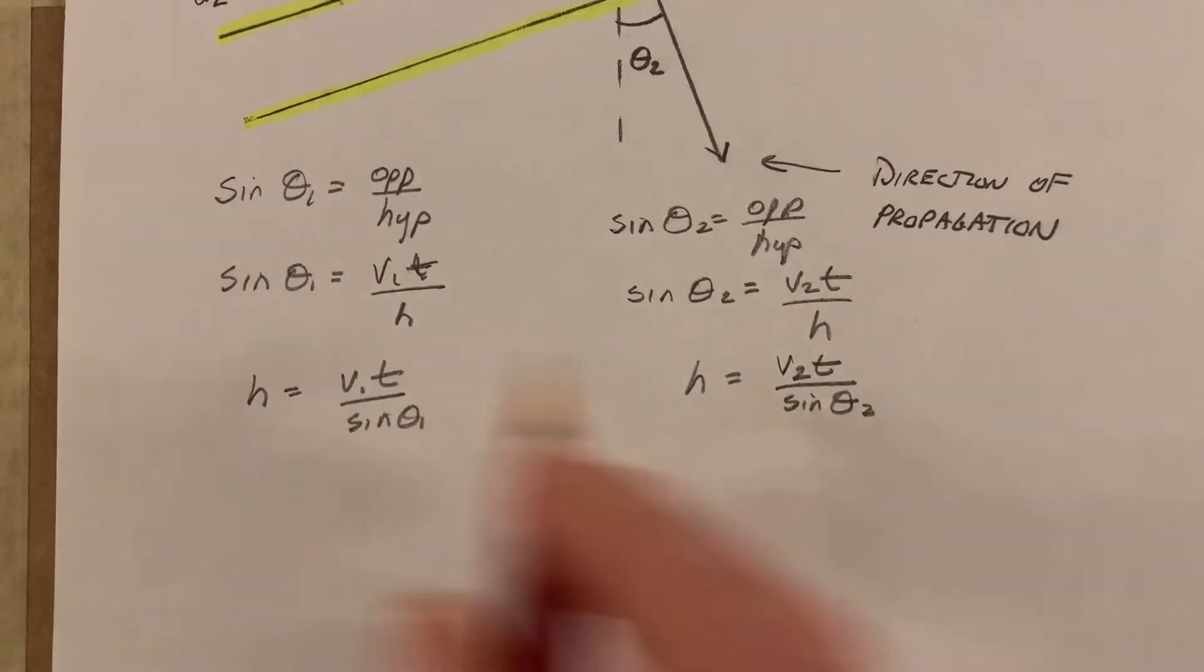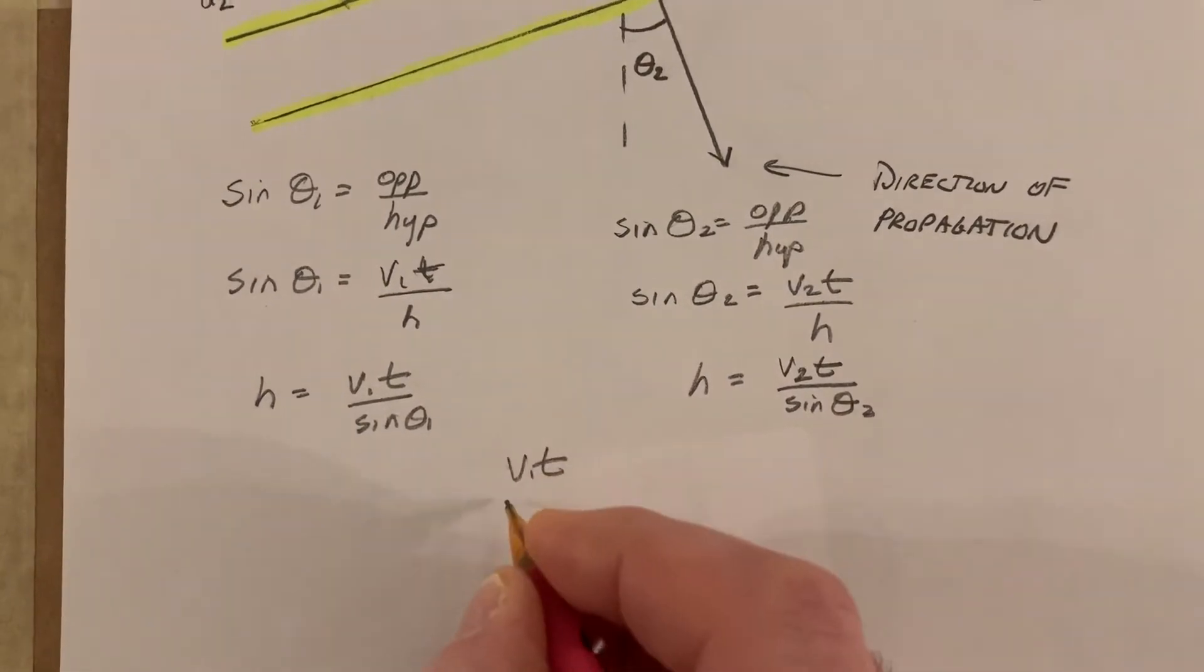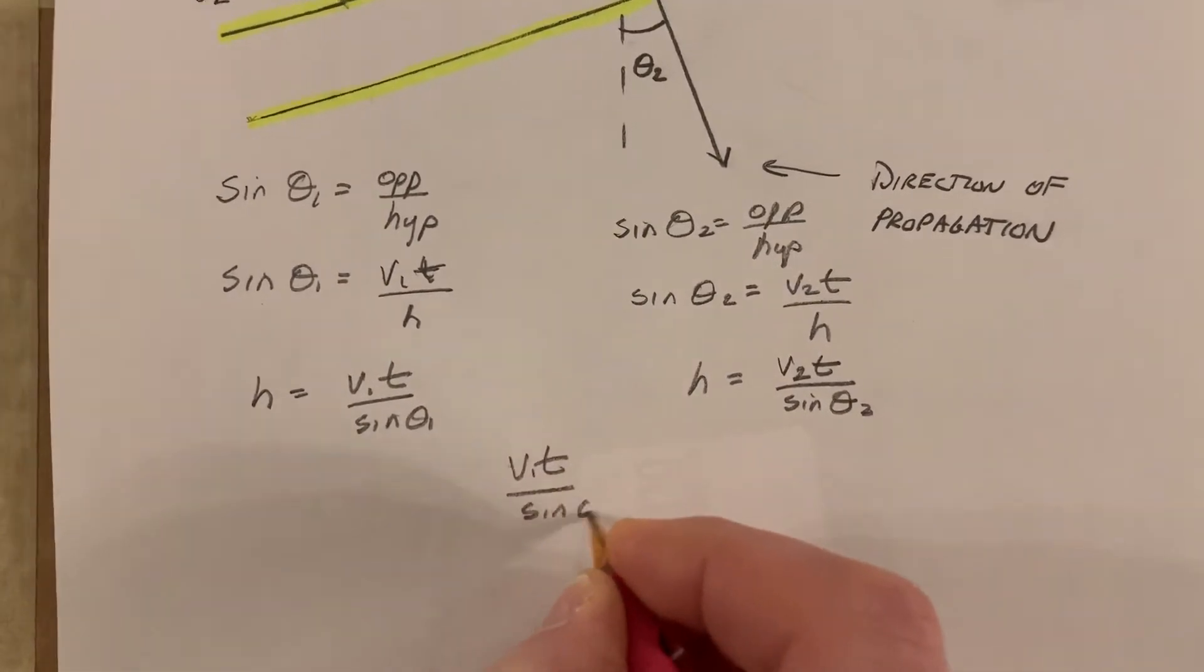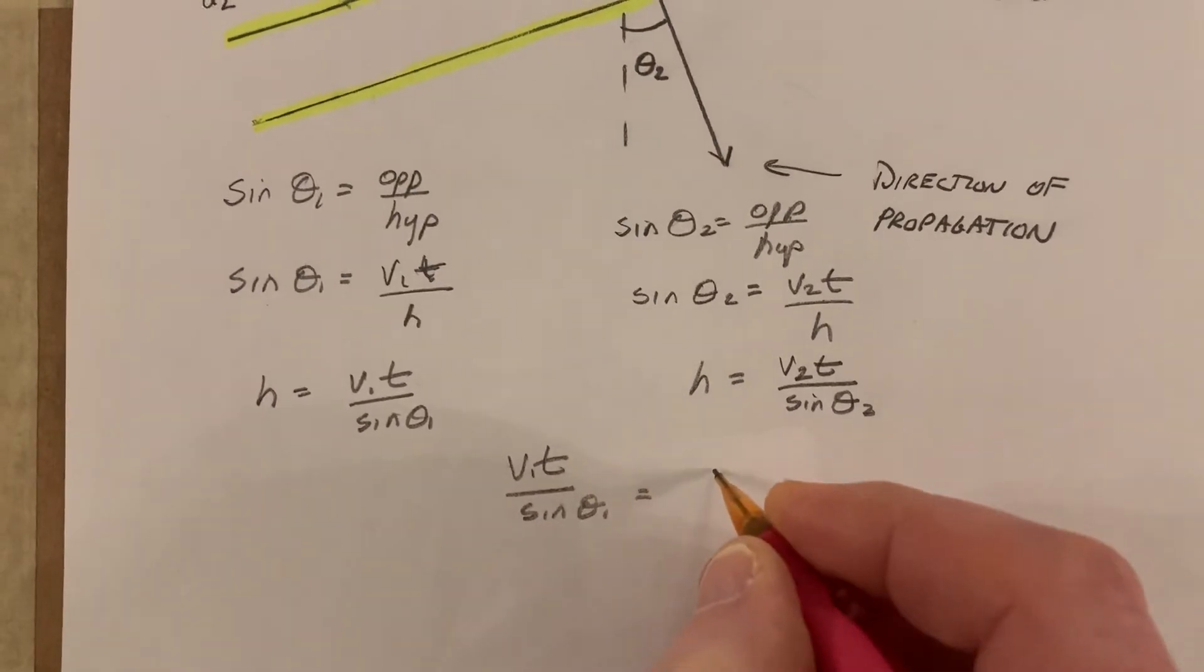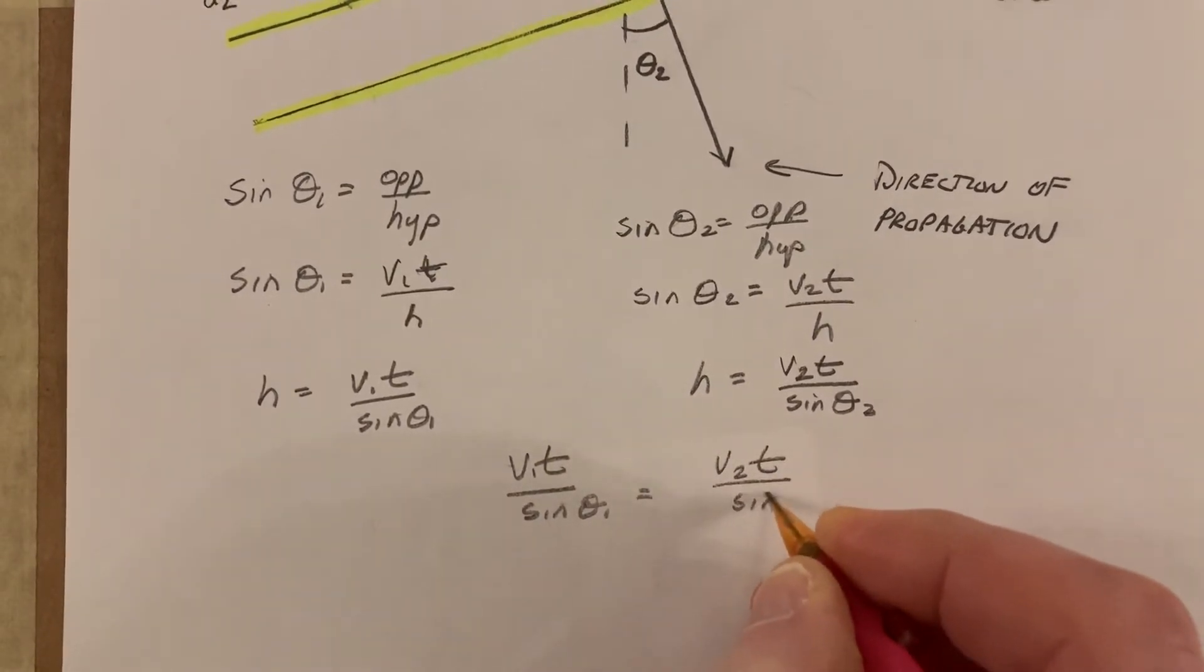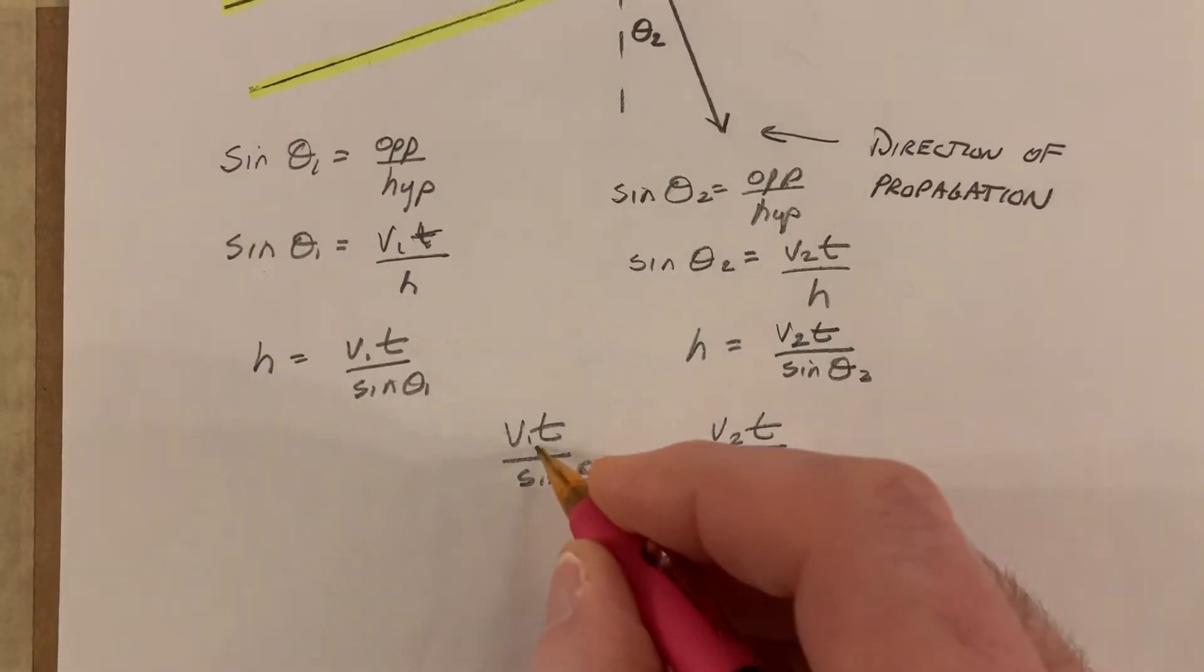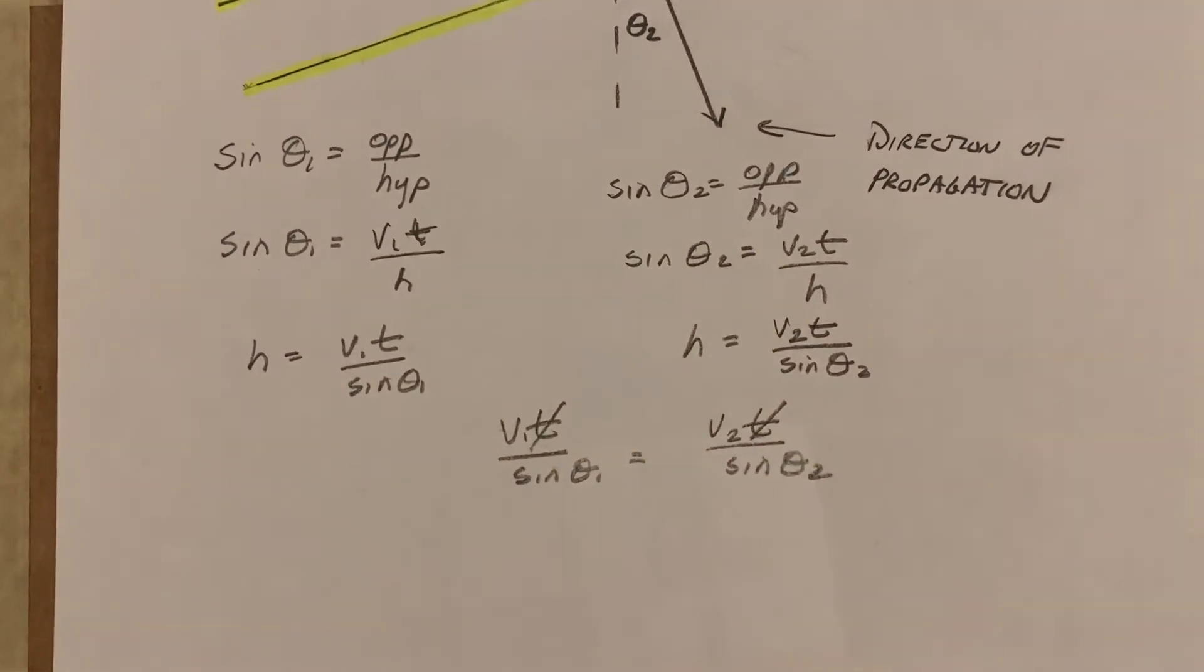Set them equal to each other. h is the same for both of these. velocity 1 times time over sine theta 1 equals velocity 2 times time over sine theta 2. Well, hold on for a second. The times are the same. Get rid of those.